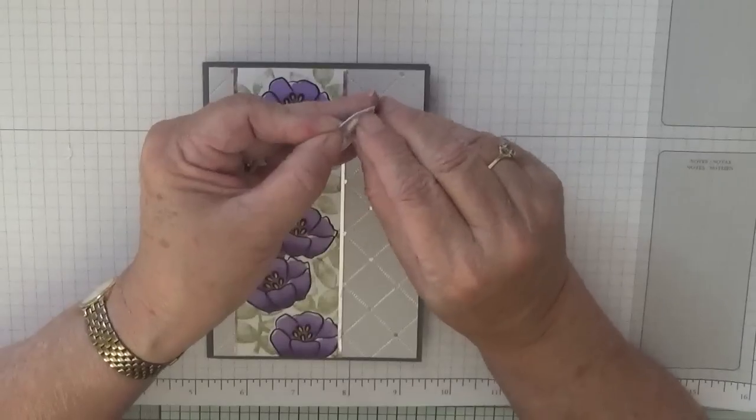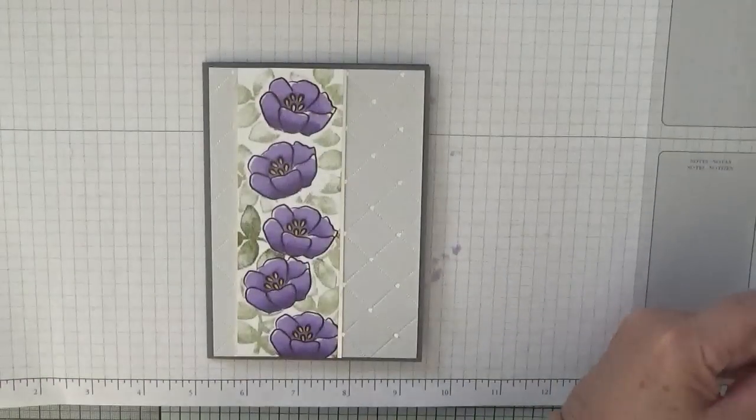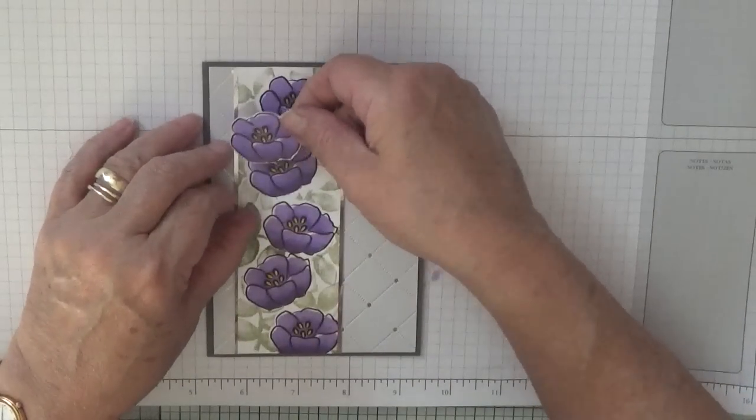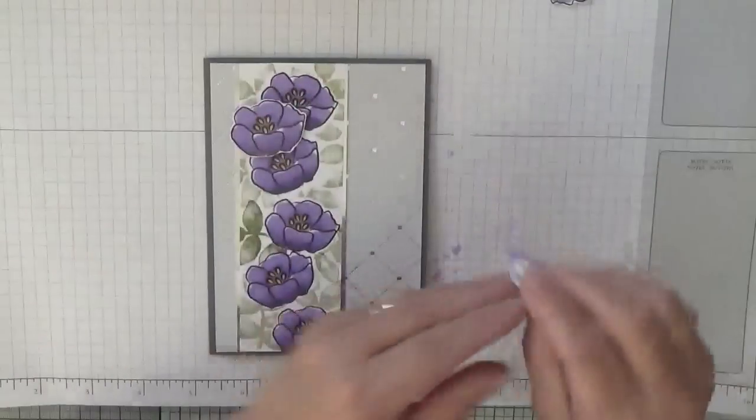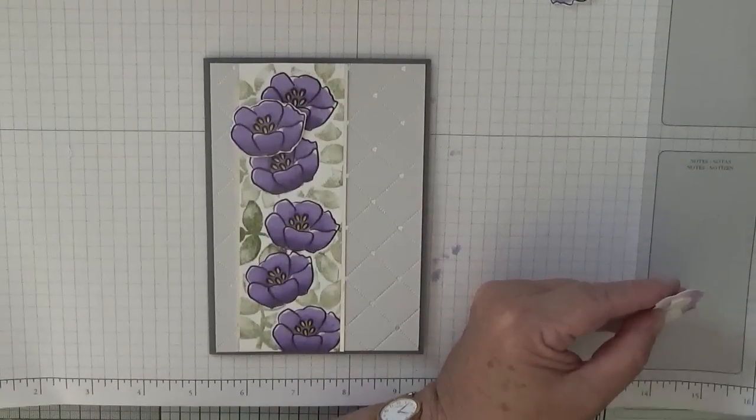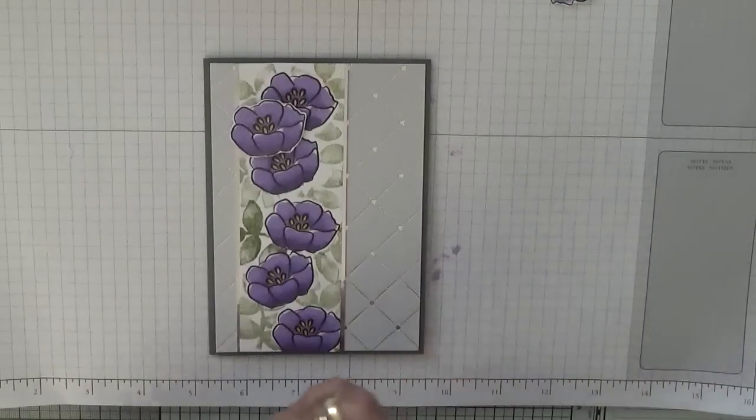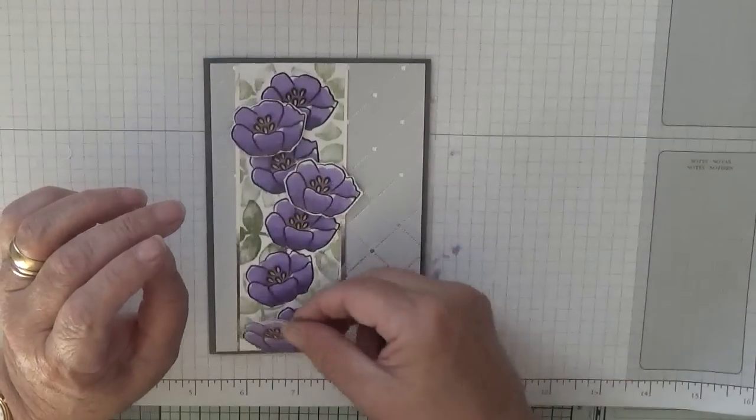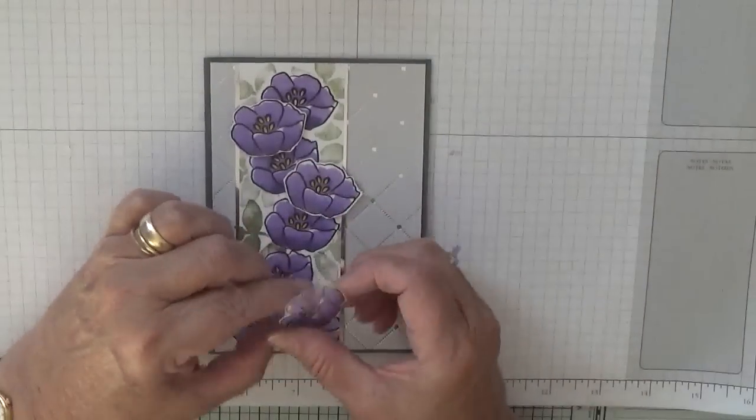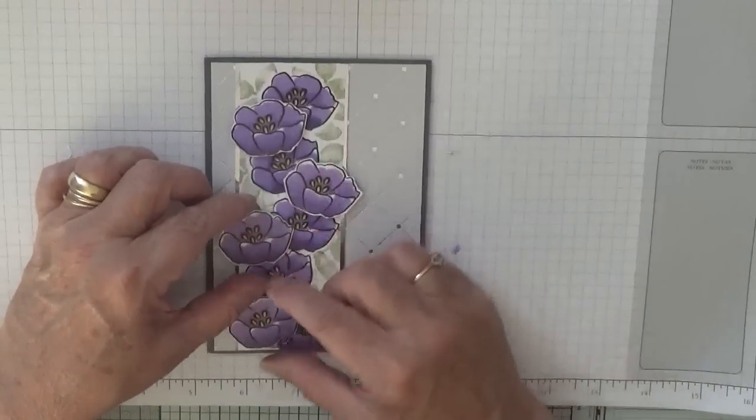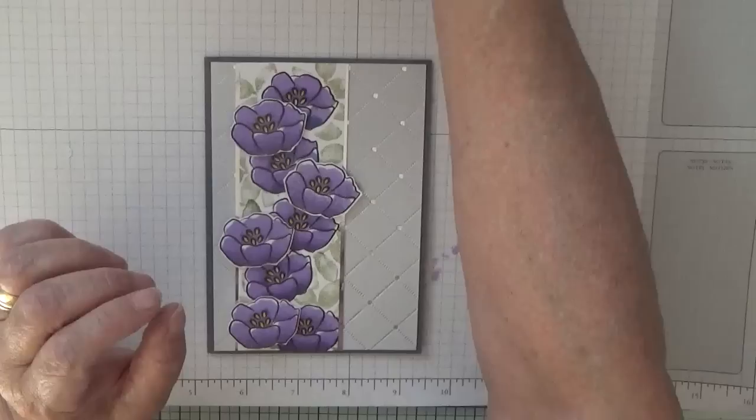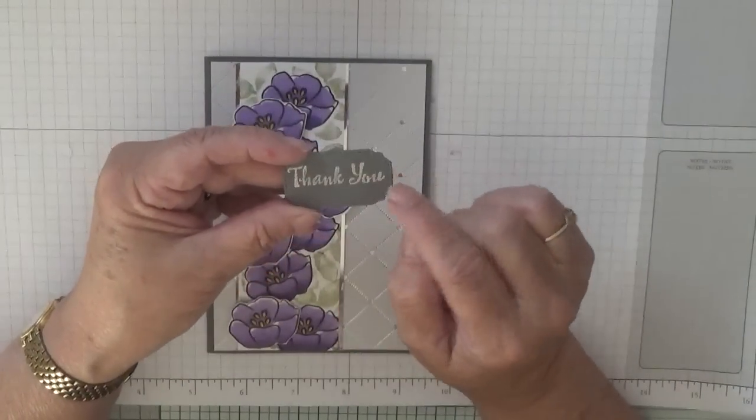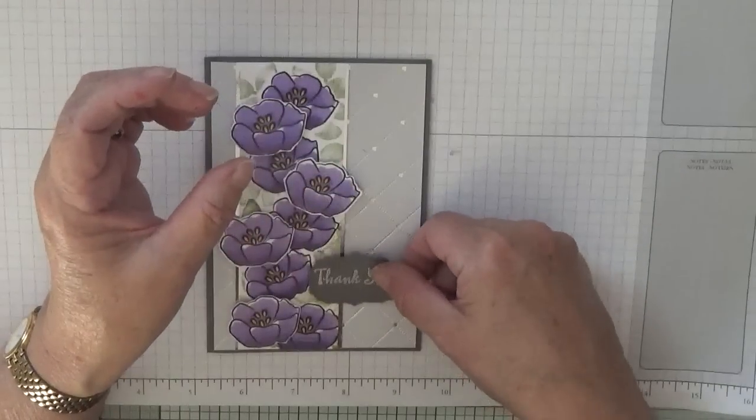So I'm going to place that one there, this one here, and that one there. And that one is done. I cut out a little shape and I heat embossed the word 'thank you' from Petal Palette, and I'm going to have that sitting there. Yeah, I like that.